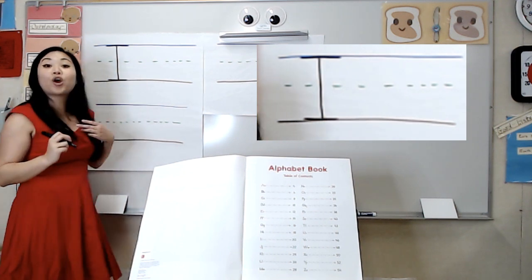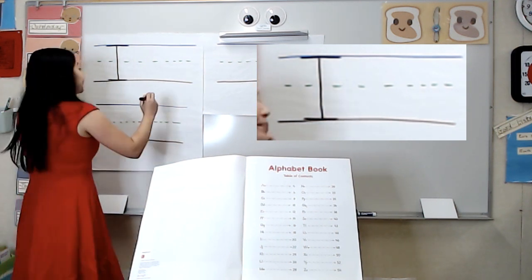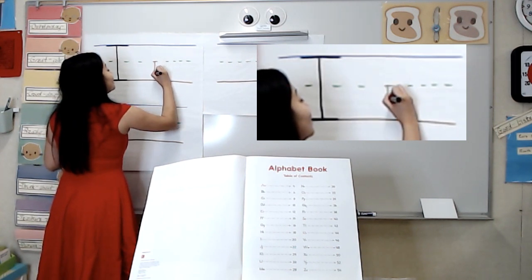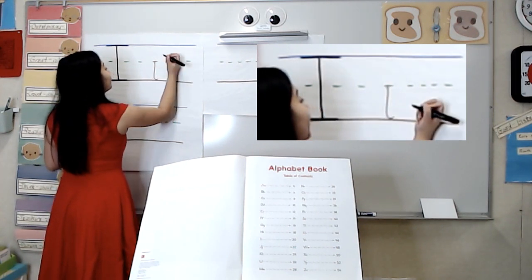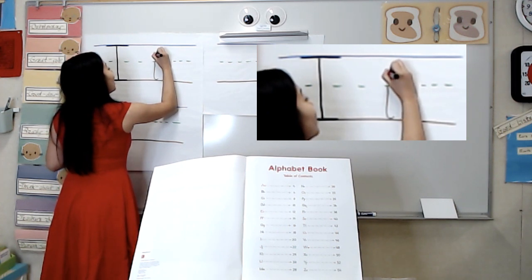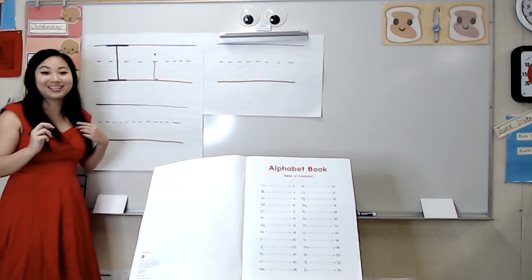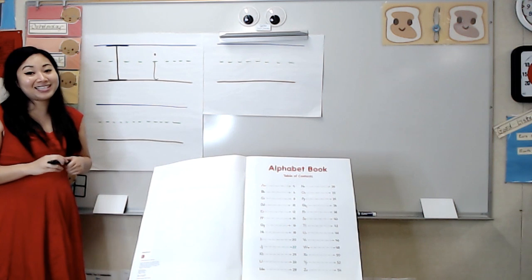For lowercase i, we start in the grass, tail on the ground, and a dot above the grass. That is the lowercase i.